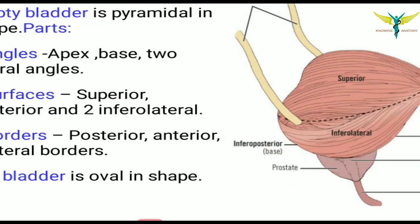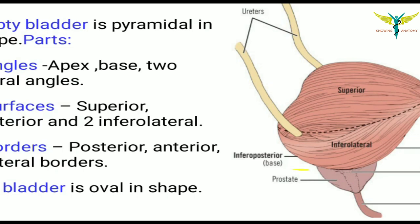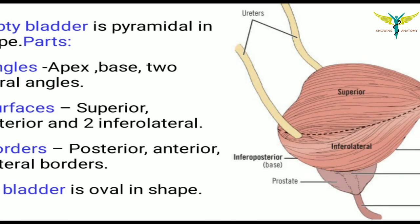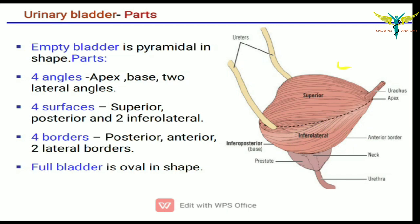The empty bladder has four angles: an apex, a base at the inferior posterior angle, and two lateral angles. It has four surfaces: the superior surface, the posterior surface, and two inferolateral surfaces. It also has four borders: posterior, anterior, and two lateral borders.